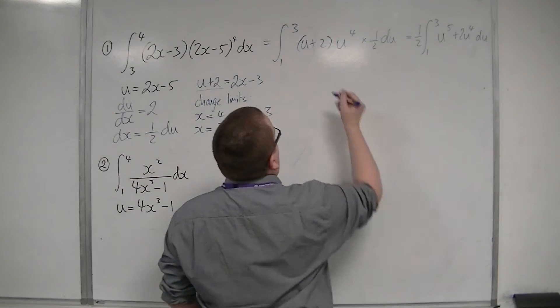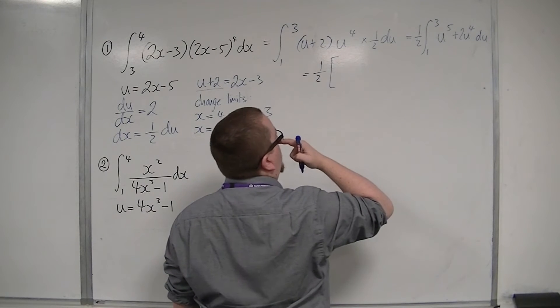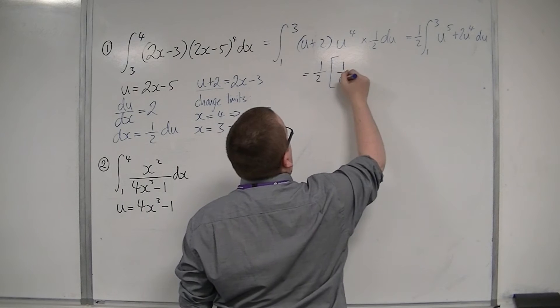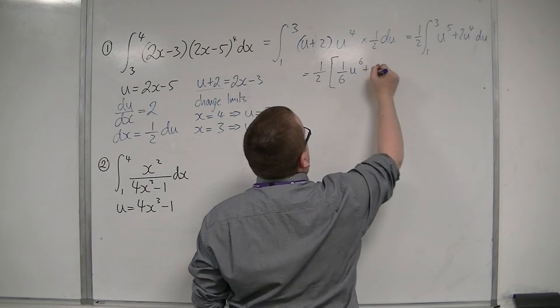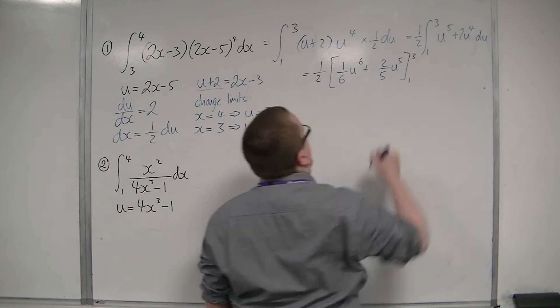So now I can integrate. So this is 1 half, square bracket, u to the power 6, divide by the new power. Evaluate it between 1 and 3.